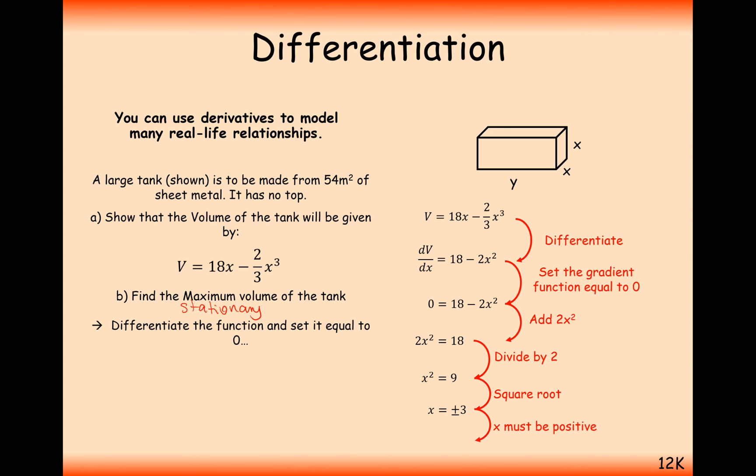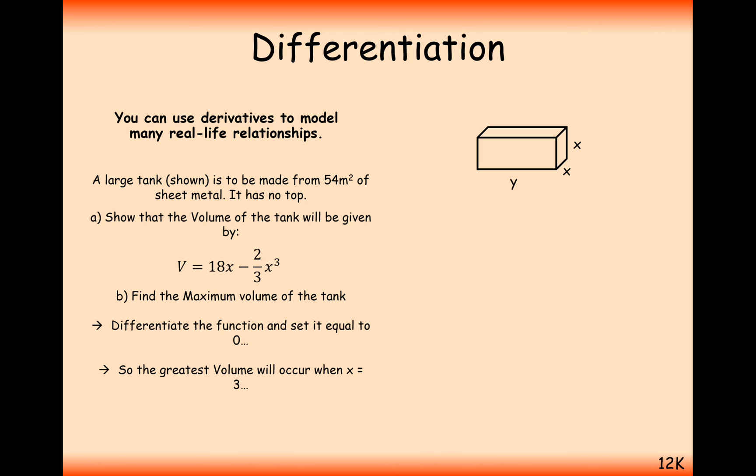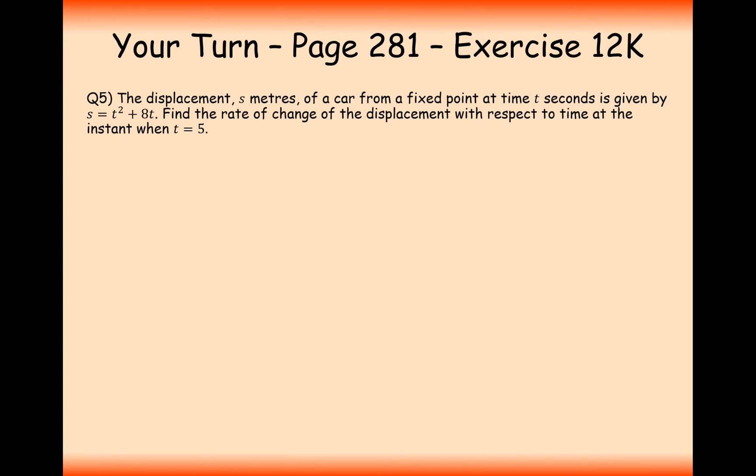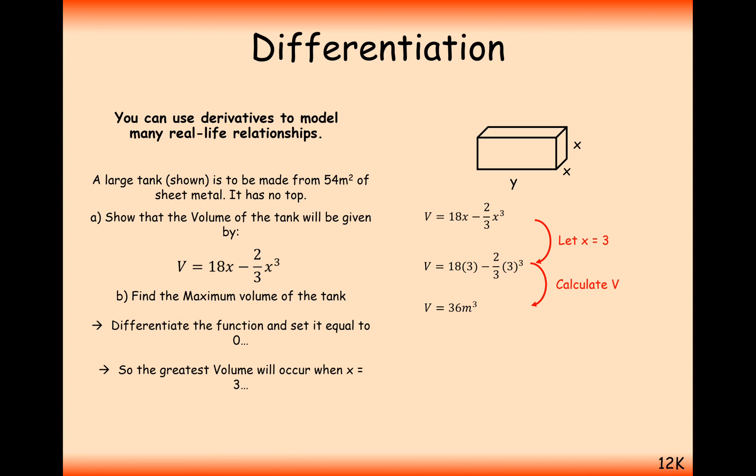So at the critical point when x is 3, the volume is going to be maximized. So to find the maximum volume, now all we have to do is just substitute in x equals 3, and we get v equals 36.